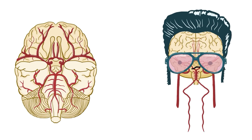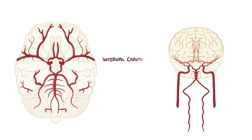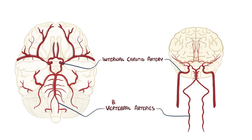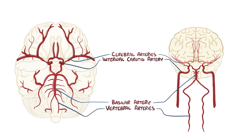The brain receives blood from the left and right internal carotid arteries, as well as the left and right vertebral arteries, which come together to form the basilar artery. The internal carotid arteries turn into the left and right middle cerebral arteries, which serve the lateral portions of the frontal, parietal, and temporal lobes. Each of the internal carotid arteries also gives off branches called the anterior cerebral arteries, which serve the medial portion of the frontal and parietal lobes, and connect with one another via a short connecting blood vessel called the anterior communicating artery.